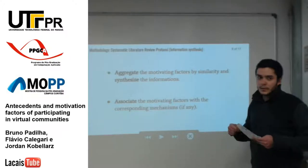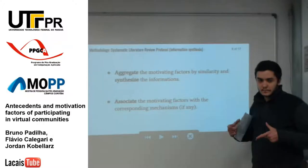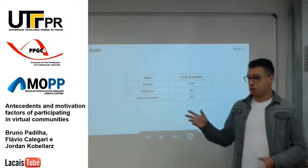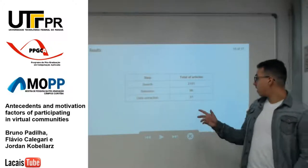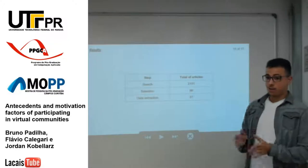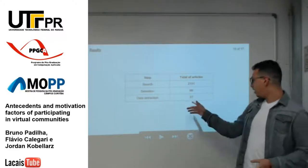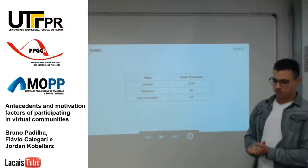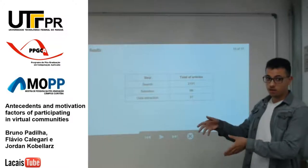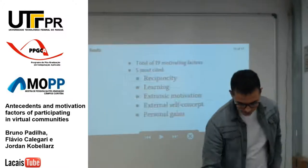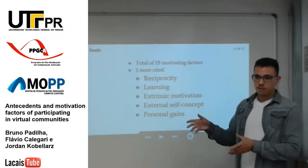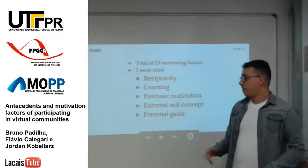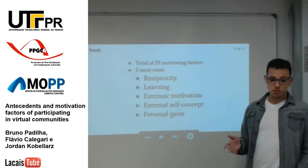Now we will talk about our project and results. Based on the systematic literature review protocol, we found around 2,100 articles. Then we selected 66 by title and abstract screening, and we extracted data from 37, because the others did not contain relevant data about motivating factors in virtual communities. Of a total of 92 motivating factors found, we grouped the five most cited factors by similarity. They are: reciprocity, learning, extrinsic motivation, external self-concept, and personal means.